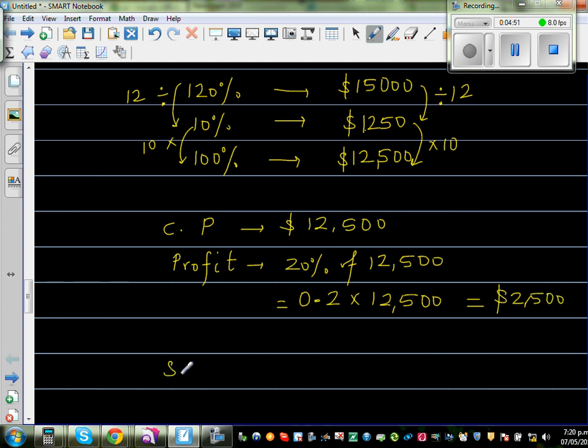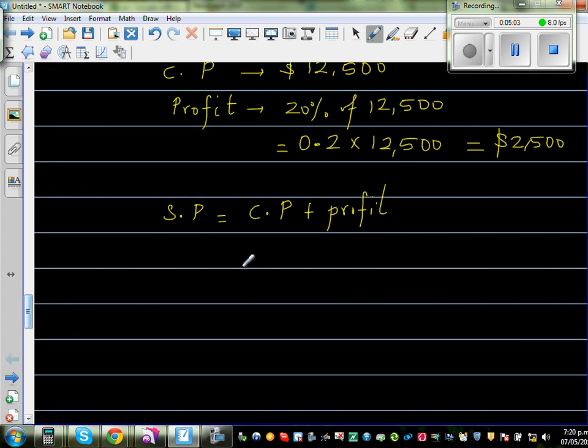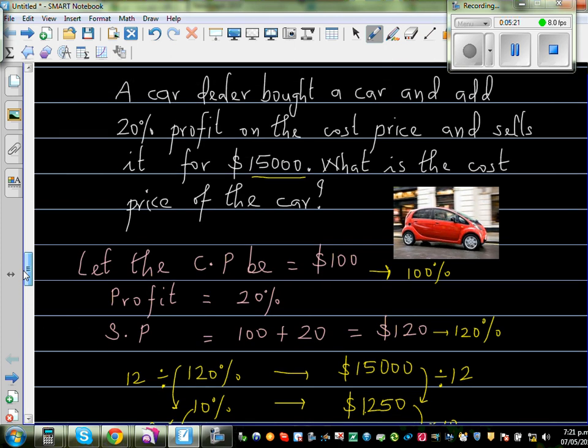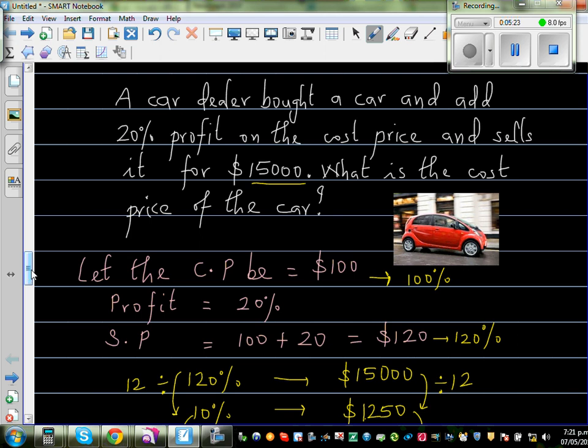And so the selling price is cost price plus profit, which is $12,500 plus $2,500, which is $15,000. So this is how you can calculate and also check your answer and find the original price or working back.